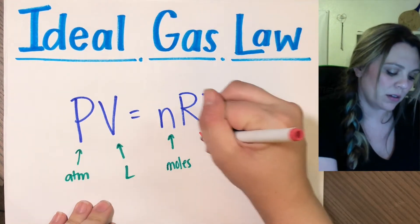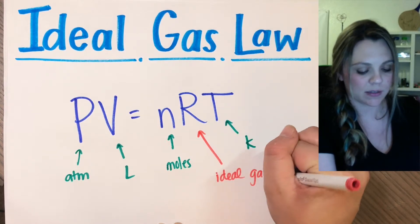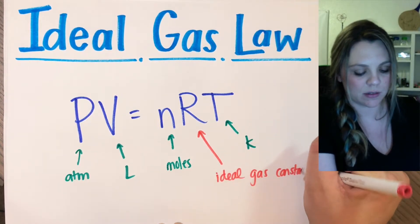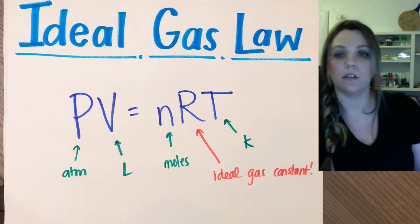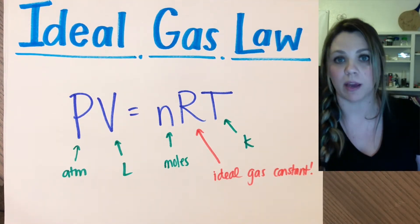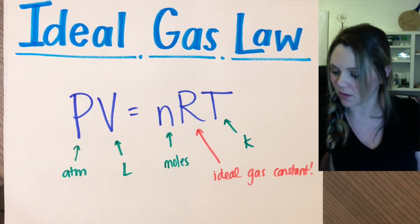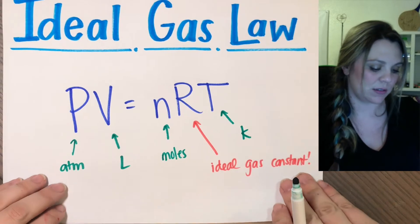So R is actually called the Ideal Gas Constant, and you don't need to memorize it. It's a constant. It's on the back of your periodic table. It's given to you. Cool times, all right? It is this beautiful number, 0.0821.